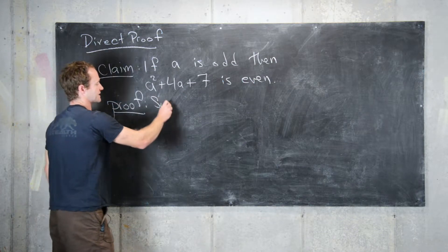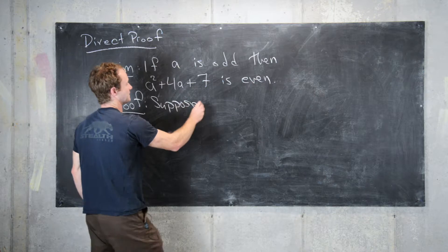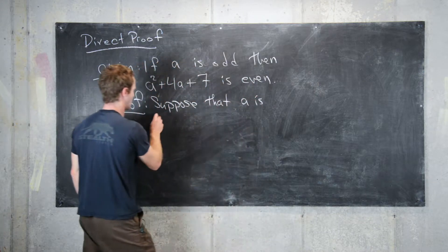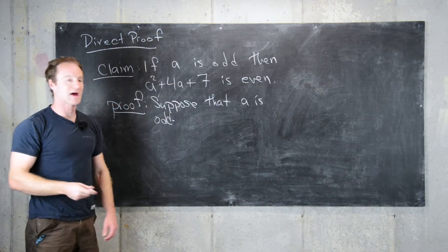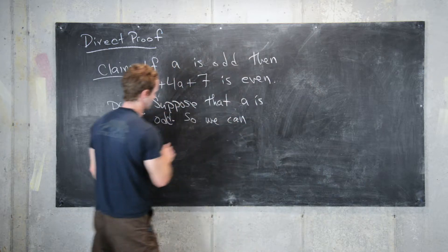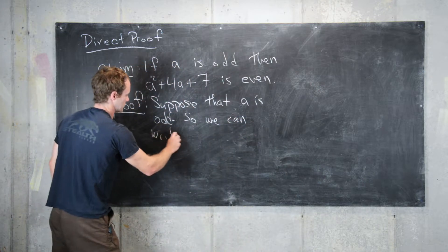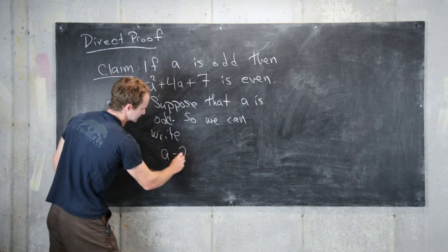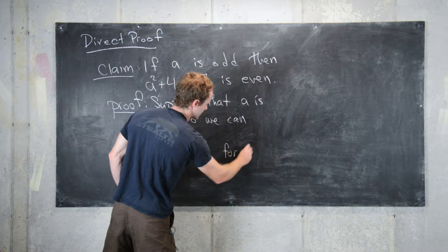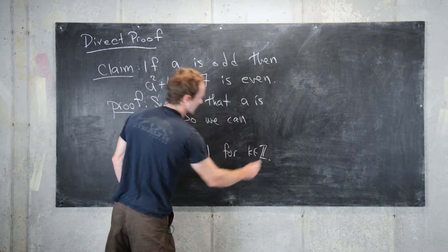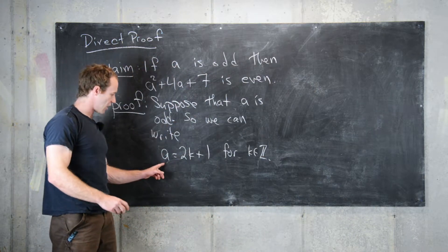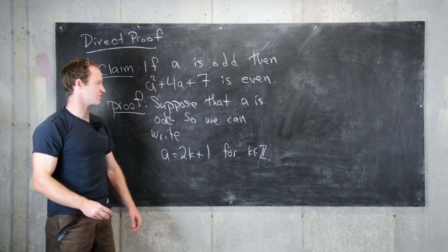We suppose that a is odd, and so that means we can write a = 2k+1 for k some integer. Remember, an odd integer can always be written as one more than an even integer.